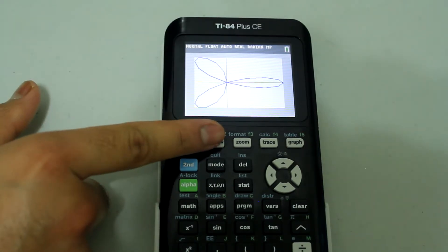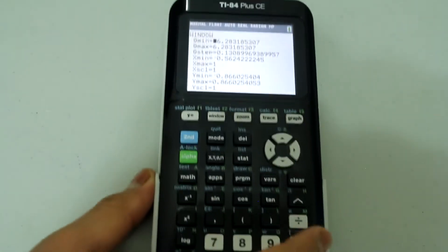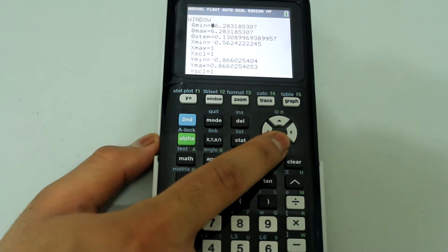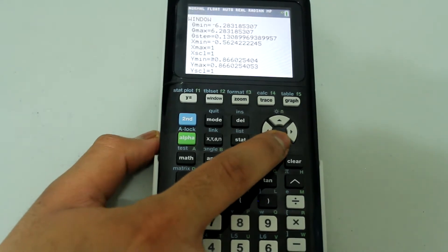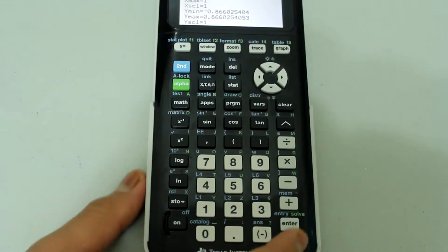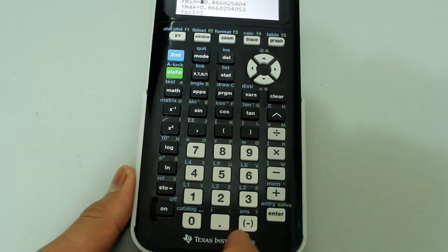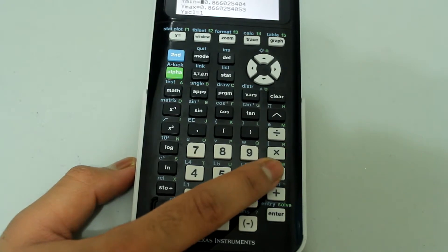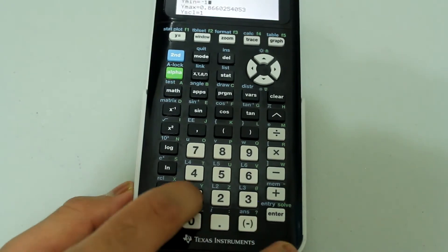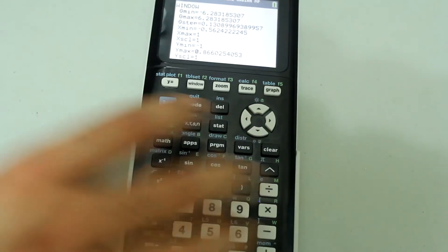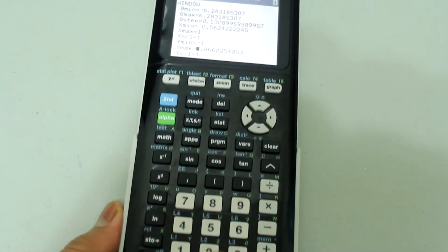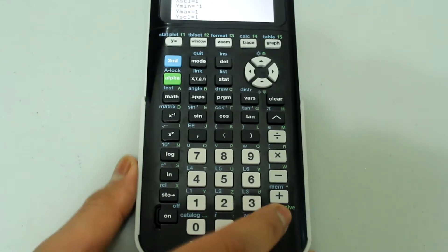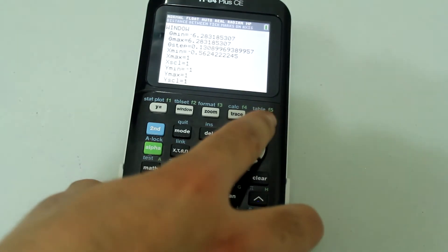If you wanted to go back and change the graphing window you can press the window button and change whatever window setting you wanted. I am going to change the Y minimum to go from negative one. So when you are choosing negative always use the negative button instead of the minus sign. So negative 1, arrow down and I am going to make the Y max just 1. Press enter and go back to graph. And there we have it.